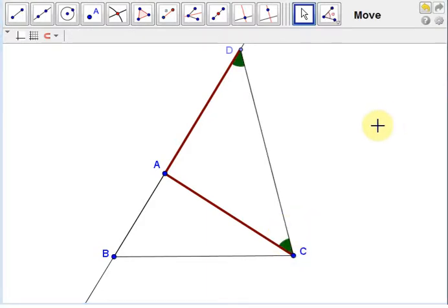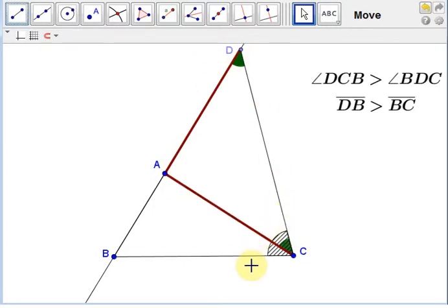Next, we observe that the angle DCB is larger than the angle DCA. Since angle DCA is equal to angle ADC, and angle DCB is greater than angle BDC, we know the side opposite the greater angle is greater than the side opposite the smaller angle.